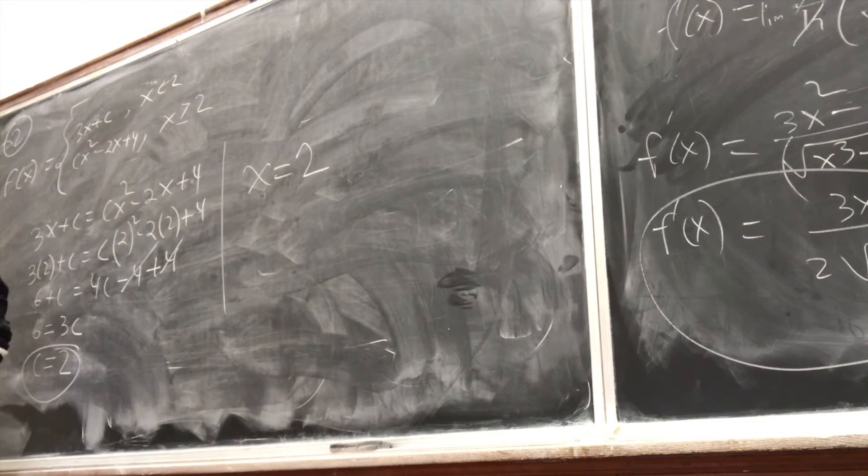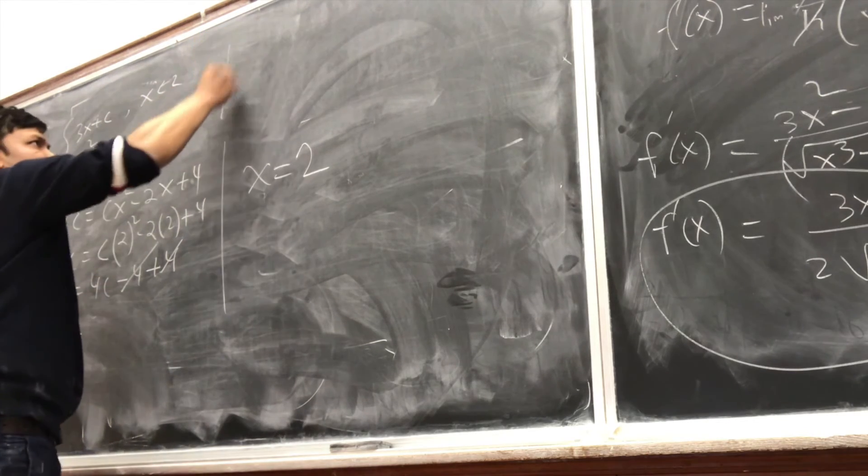So at c equal to 2, the function is continuous. That's what we need to find, and we just found it. When c is 2, the function is continuous. So the answer is c = 2.